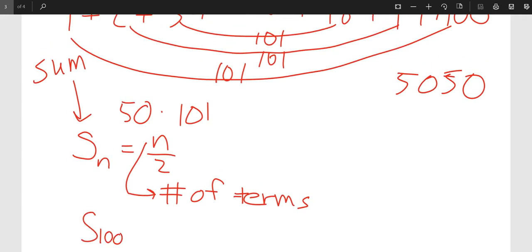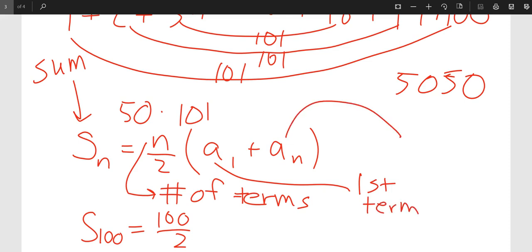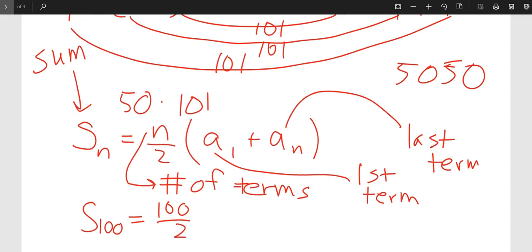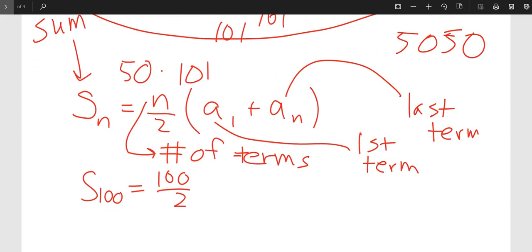So, in his example, it would be the sum of the 100 terms would be 100 over 2. That's the number of pairs. Times the sum of the first term and the last term. So I hope everybody in the room knows that A sub 1 stands for the first term. A sub N stands for the last term. So, according to his formula, that would be first term plus last term. It's a pretty easy formula to use.